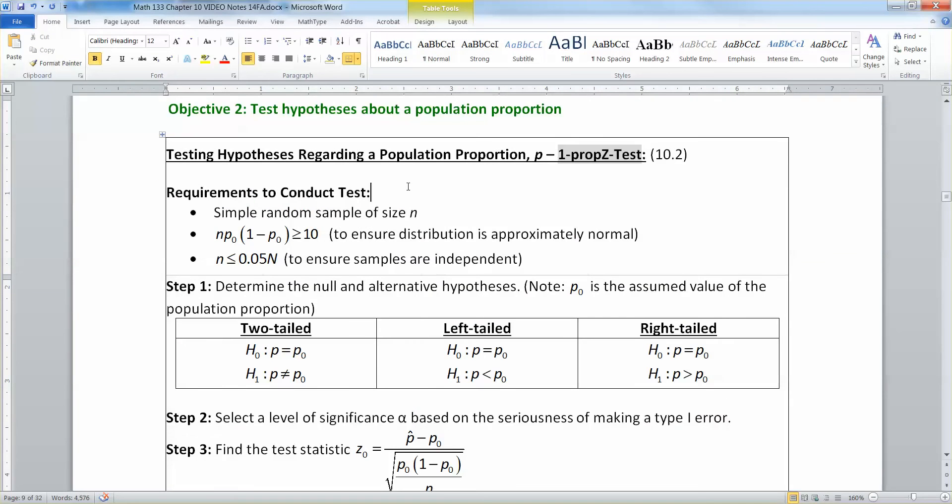So, requirements, also known as assumptions, right? Things that you have to assume, otherwise you can't actually run the test. So, you have to have a simple random sample of size n. We always have to have n times p times 1 minus p greater than or equal to 10 to ensure the distribution is normal. And then you have to have n less than or equal to 0.05 capital N, capital N being the size of your population, to ensure your samples are independent.